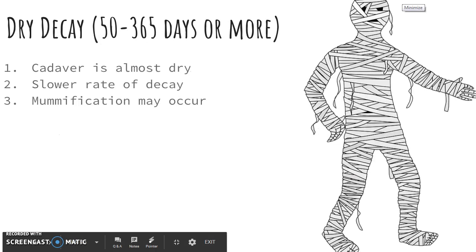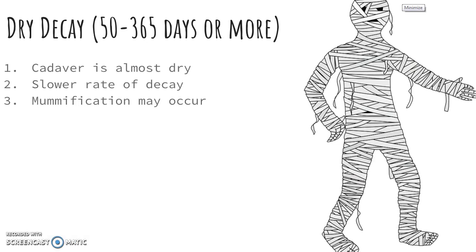Dry decay is the last stage. This is where the body is almost completely dry and almost skeletonized. The rate of decay slows greatly and you may even see mummification.